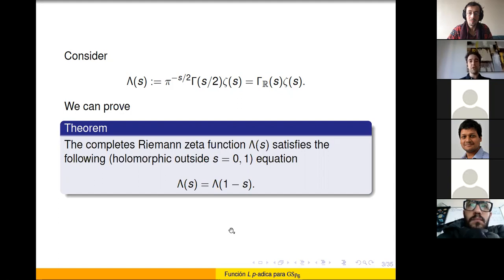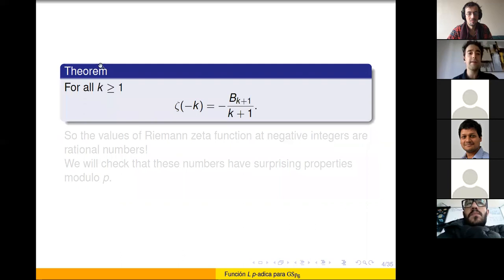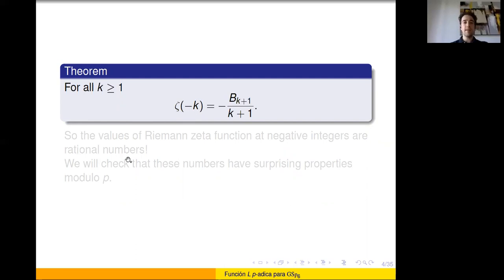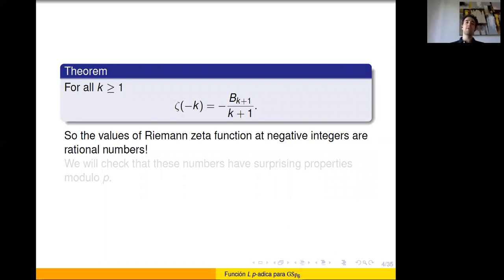Using the functional equation, we can calculate values at negative integers. Putting 2k and 1 minus 2k into the functional equation, we get that zeta of minus k equals the (k+1)-th Bernoulli number divided by (k+1). So the values at negative integers are very simple numbers — they are zero when k is even (because k+1 is odd), which is kind of surprising. What we do with p-adic functions is study how these numbers vary in congruences modulo p as k varies.